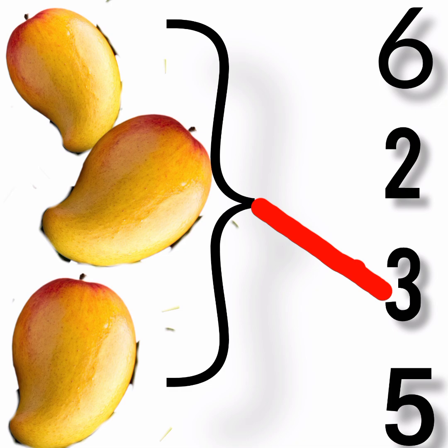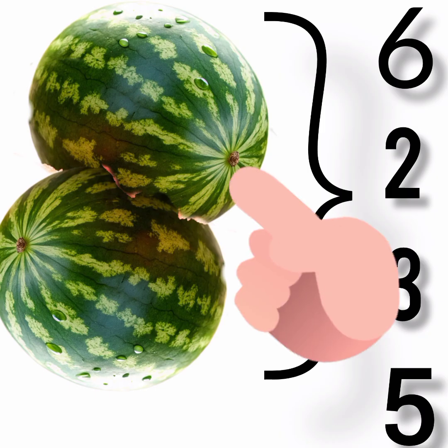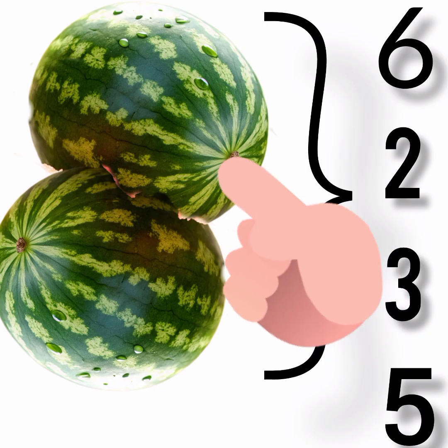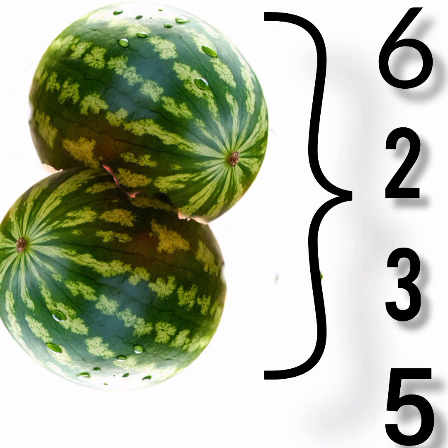How many watermelons do we have here? Let's count: 1, 2. We have 2 watermelons. So let's match the watermelon to the correct number, which is 2. That's correct.